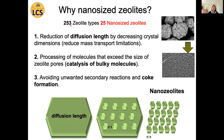Currently there are 253 different zeolite types registered at the International Zeolite Association database. But from these 253 different types, we could synthesize only 25 with nanosize dimensions, and today I will be talking explicitly about nanosize zeolites.